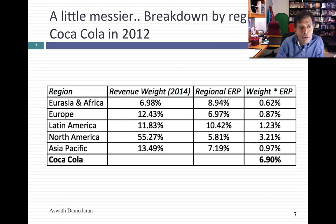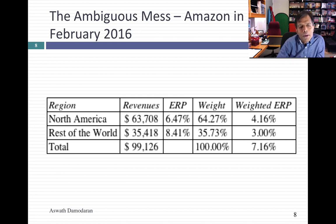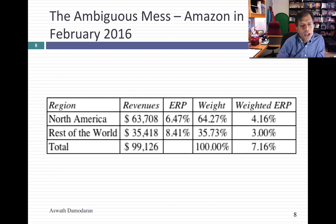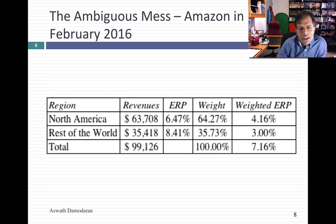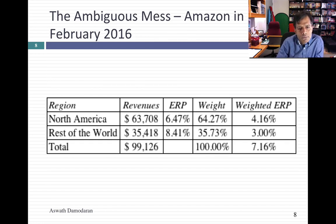So many companies break their revenues down by region, and as long as the regions match up to the regions on the map, you're home free. Now comes the messiest case: what if the breakdown doesn't fit the regional breakdowns I had in my map? I'll take this issue with many U.S. companies. This is Amazon in February 2016 — after I'd updated all numbers to February 2016, I valued Amazon. They get about $64 billion of revenues in North America and $36 billion in the rest of the world — so 64% North America, 36% rest of the world.